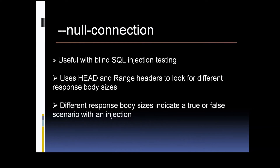The next one is the null connection option. When you're performing tests for SQL injection, particularly with blind SQL injection, there are different techniques you can use to manipulate the responses received from the web server. The null connection switch tells SQL Map to use null connection techniques with either the range or the head HTTP headers. Injection vulnerabilities can then be discovered by looking at the size differences in the responses for the content length header. You could fire up Burp Suite and have SQL Map running through it to pick out those size differences — it's basically a way to infer injection attacks.